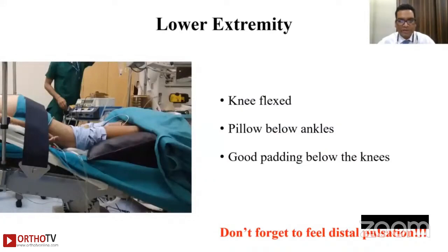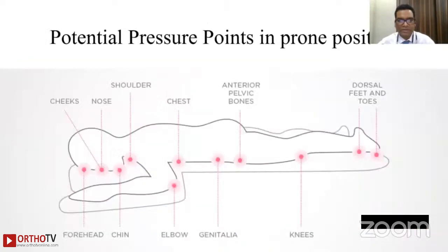For the lower extremity in prone position, keep the knees flexed, place a pillow below the ankle, and ensure good padding below the knees. Never forget to check distal pulsations. Key pressure points in prone position include the forehead, chin, elbow, genitalia, and knees.